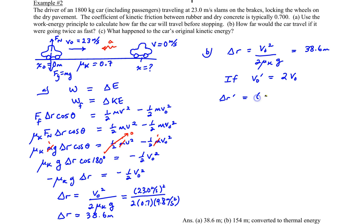Delta R prime will be v zero prime squared divided by two mu k times g. We're going to assume that it's the same coefficient of friction and acceleration due to gravity. And so what we'll see is if we replace v zero primed with two v zero squared now, that quantity v squared, we'll see that our new distance is going to be now four times our distance that we had earlier. So all we need to do is take four and multiply 38.6 by that, which will give us roughly 154 meters.